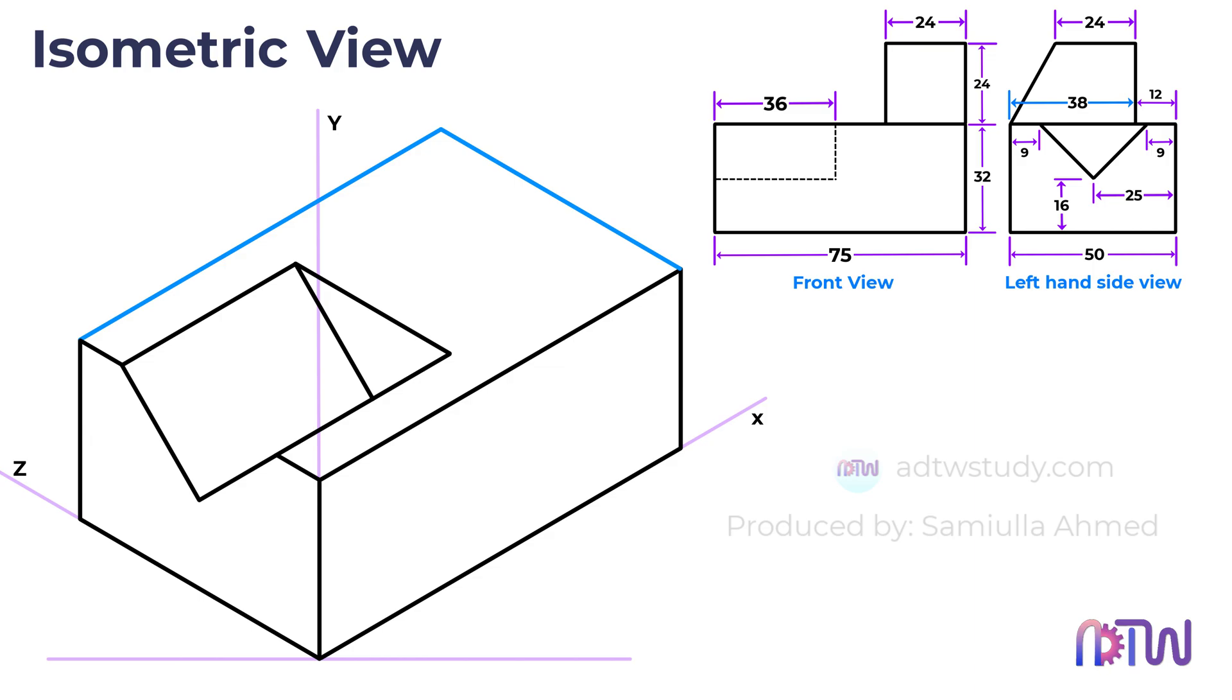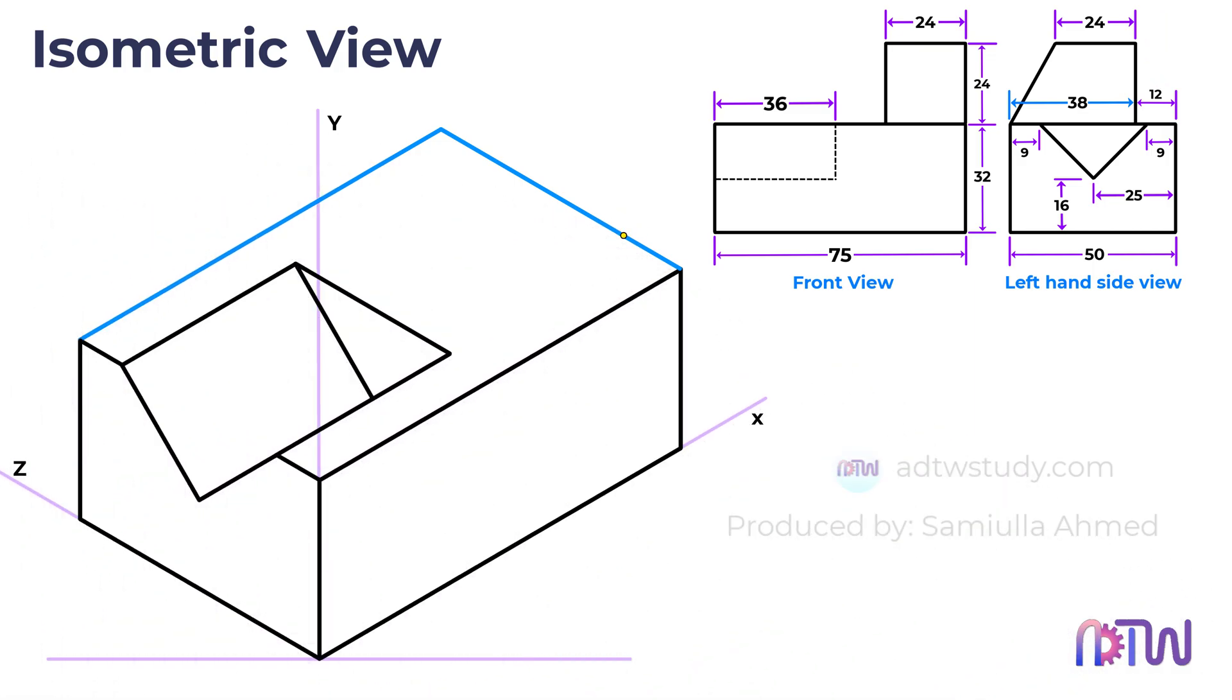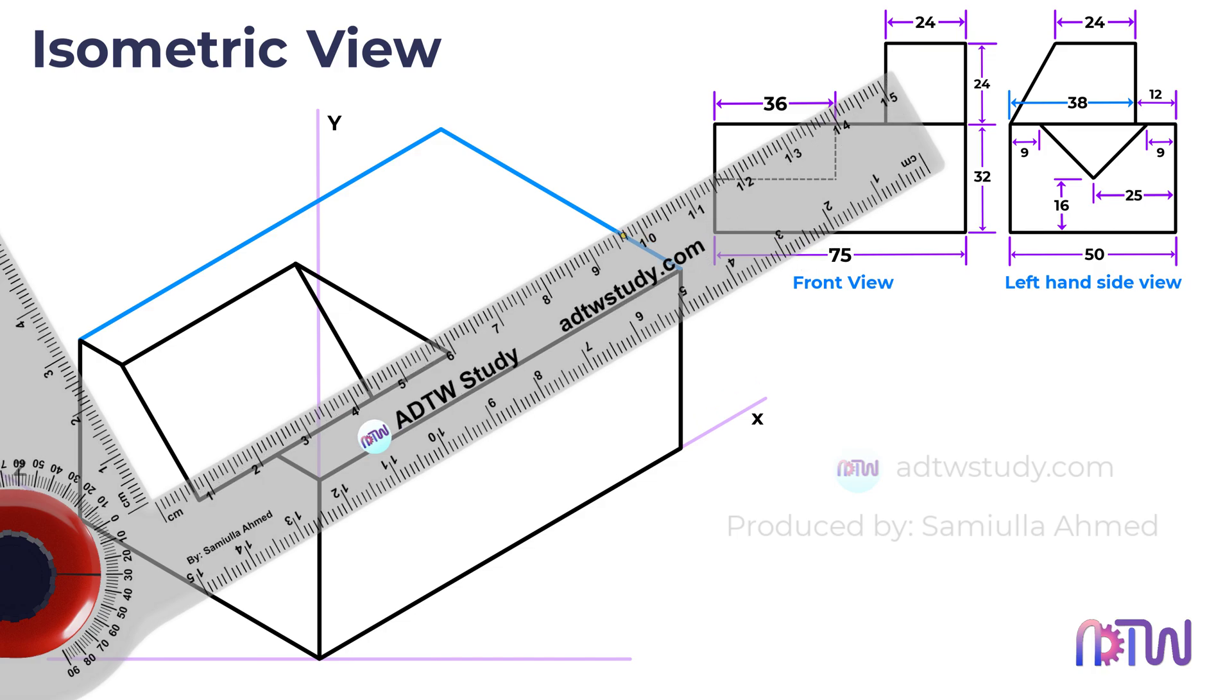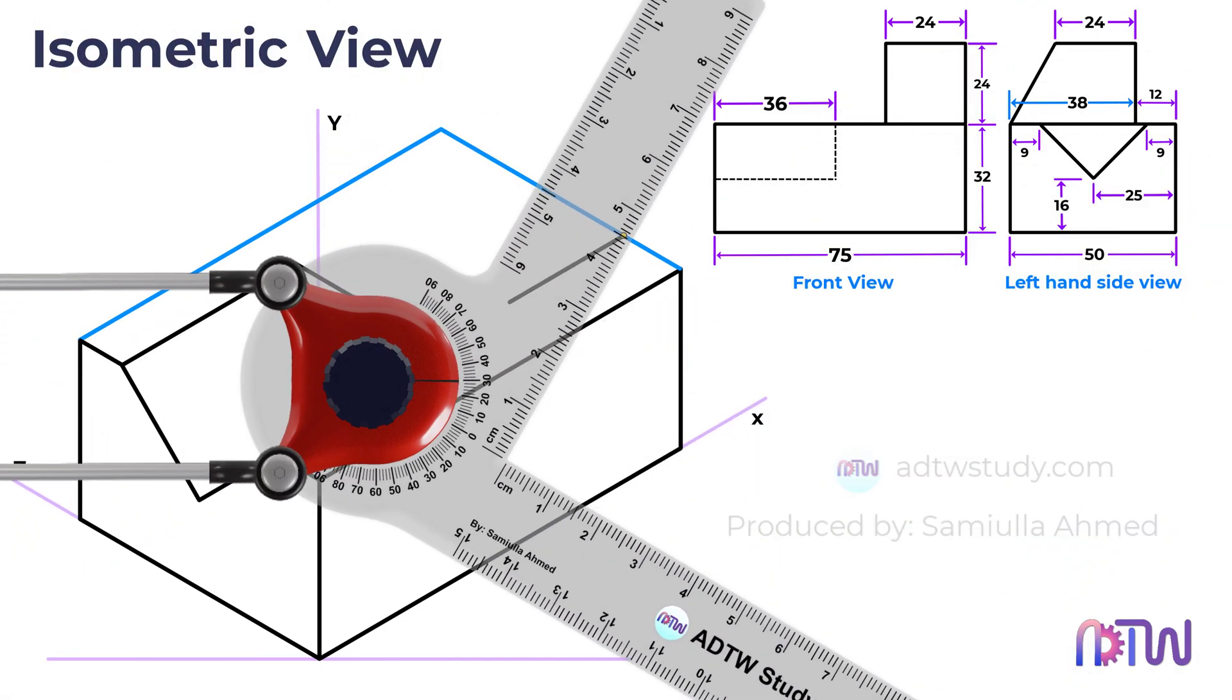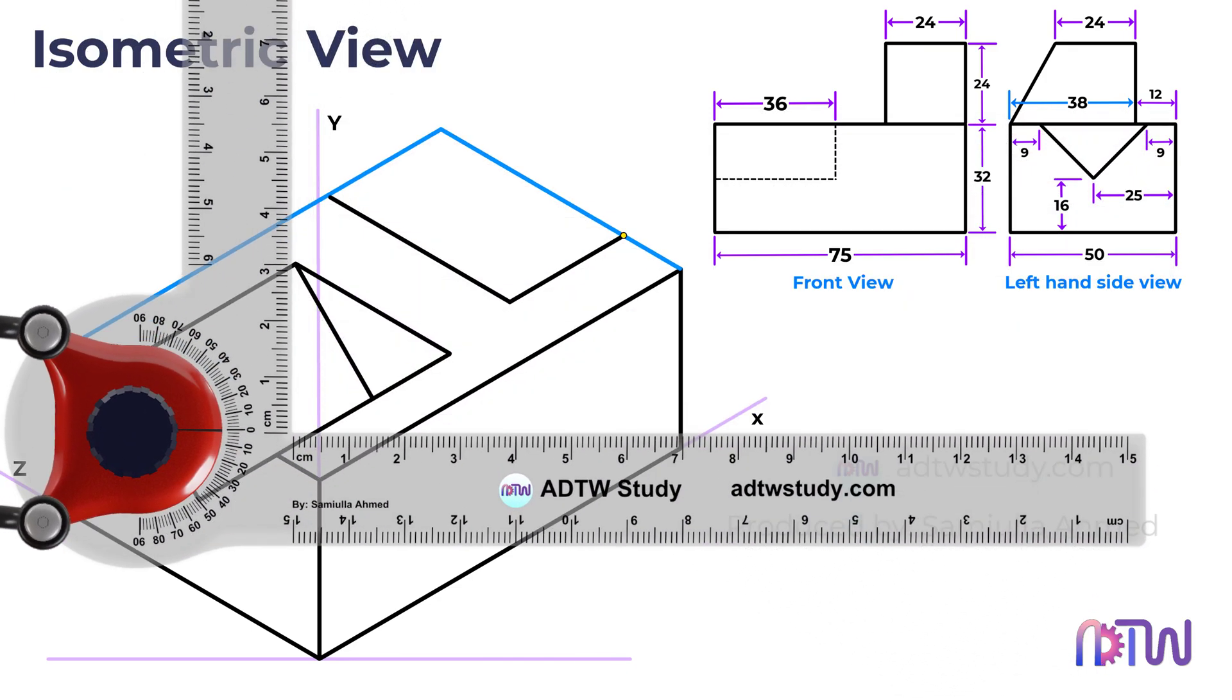Begin by marking a point 12mm away from the corner as demonstrated. Subsequently, draw a 24mm line parallel to the X-axis from this point. Then, create a parallel line to the Z-axis from the endpoint of the previously drawn line. This serves as the foundation for the upper portion of the given object.